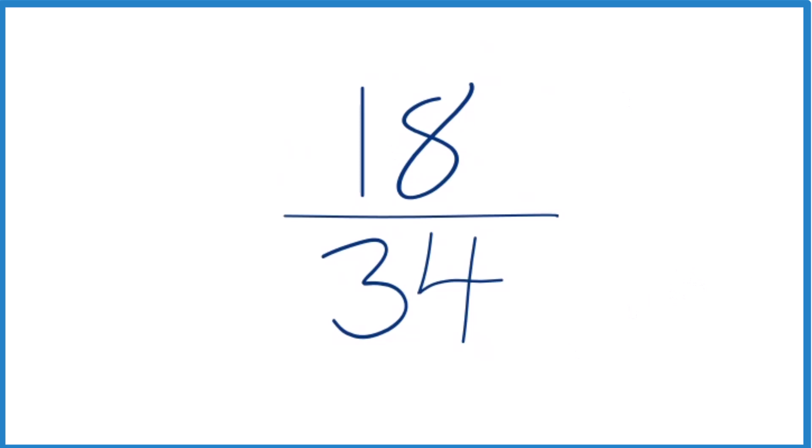To do that, we need to find a common factor, something that goes into 18 and 34 equally. We're looking for the greatest common factor. Since they're both even numbers, I'll divide both by 2. That's usually a good idea.